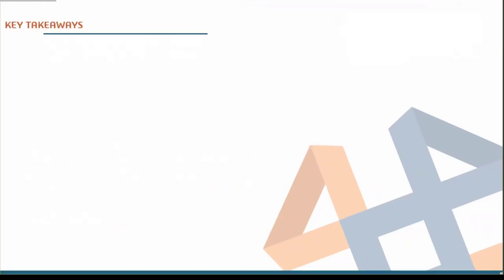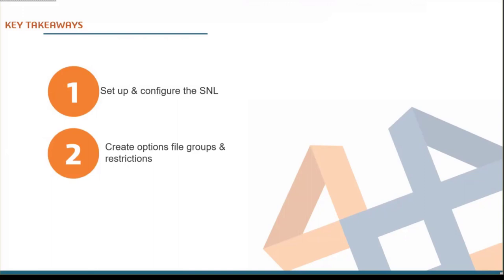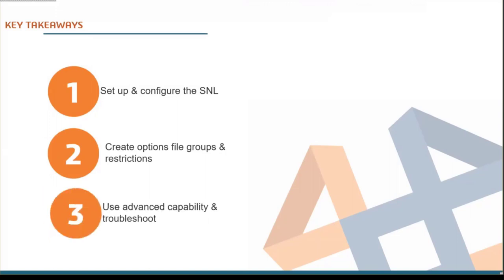We're going to look at three things today. First, setting up and configuring the SNL — that's where your licenses are actually divvied out if you have a network license. We'll cover how to set it up, configure it, some troubleshooting, and how the SNL works. Then we're going to create file groups and restrictions to control those licenses — creating groups of people and saying which licenses they can and can't have. Finally, we'll use some advanced capability with keywords in our options file and cover some basic troubleshooting.